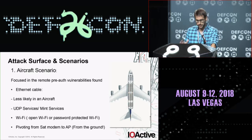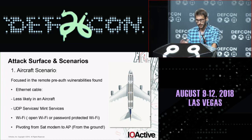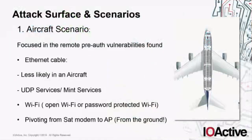For the attack surface and scenarios, I divided into two categories, mainly because the aircraft scenario is a little different with some particularities. All of this focuses on the remote pre-authenticated vulnerabilities I found. First, we have the Ethernet cable attack surface — if the attacker has physical access to the access point, they can just connect the cable to the device at any port or administrative port, and if they can reach the vulnerable UDP service and MINT services, they can technically exploit the issues.